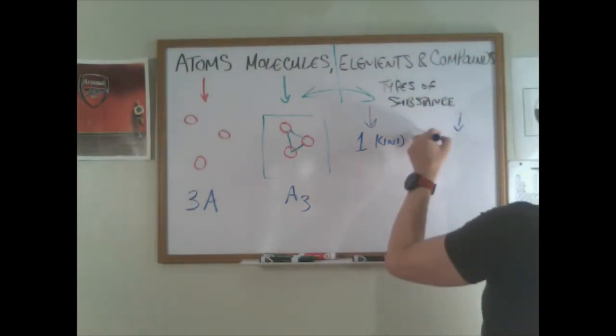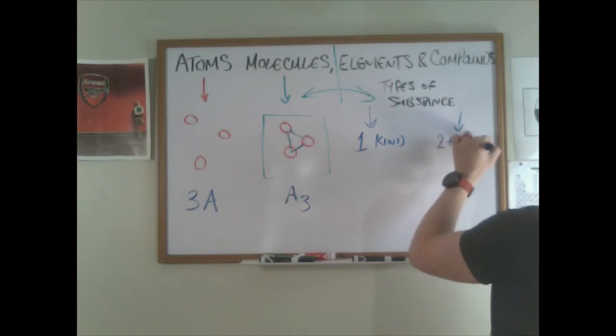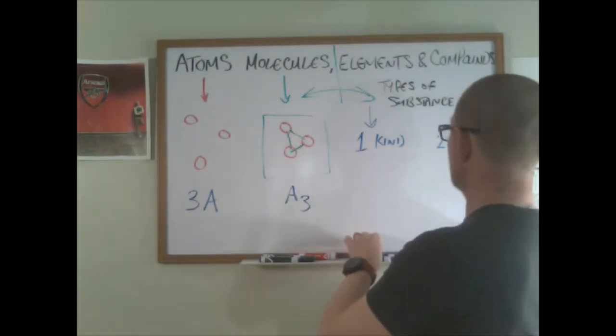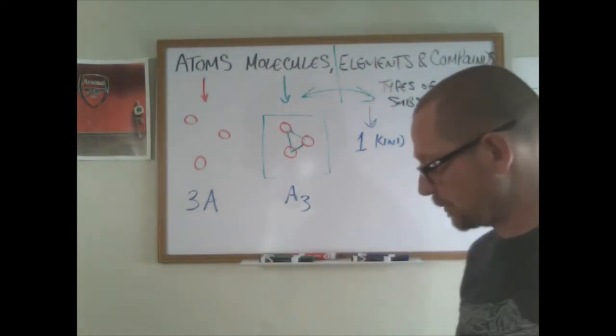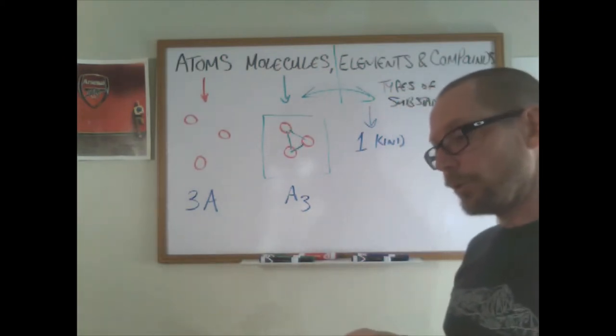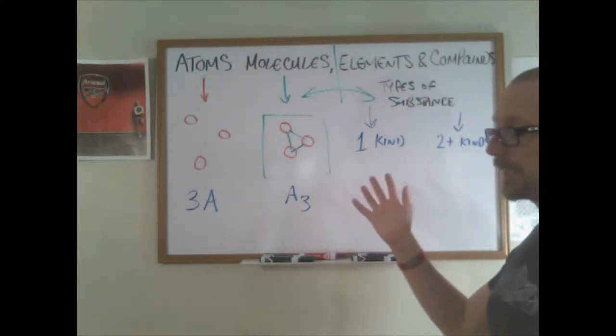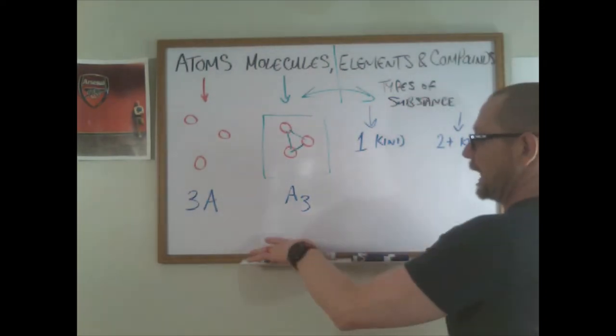Is it made of one kind of thing, element, one kind of? Or is it made up of multiple kinds, two plus, two or more kinds? One kind of thing versus two kinds of things. We're not talking about whether or not they're atoms or molecules over here.